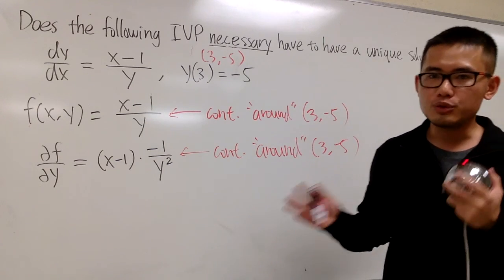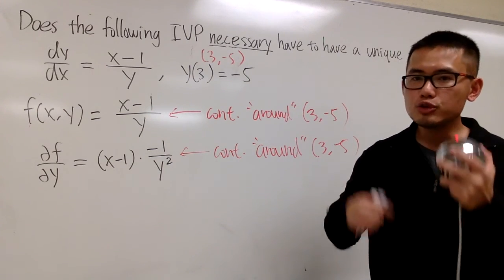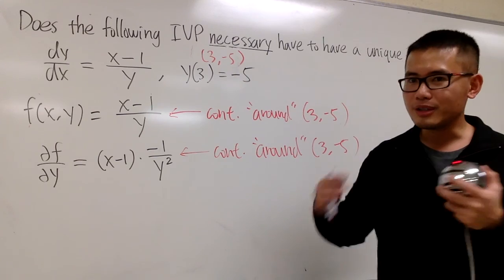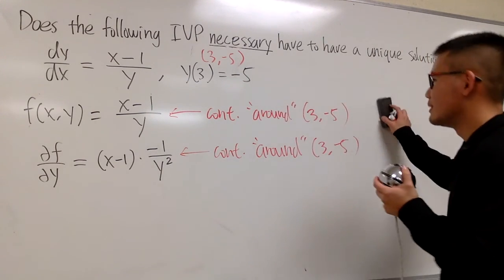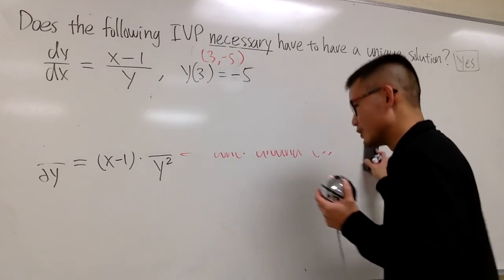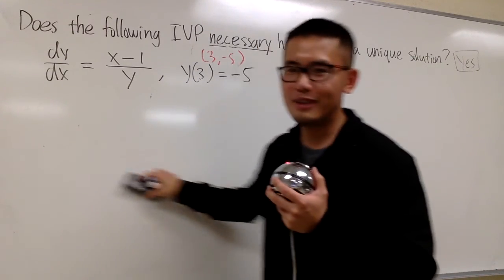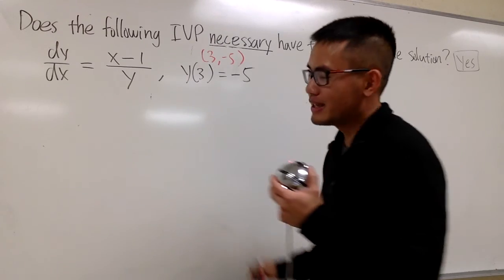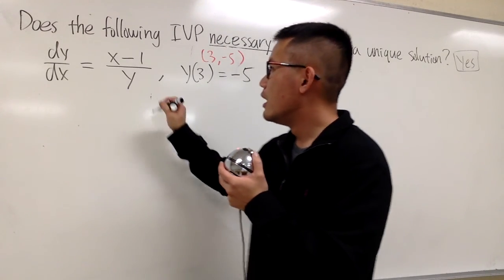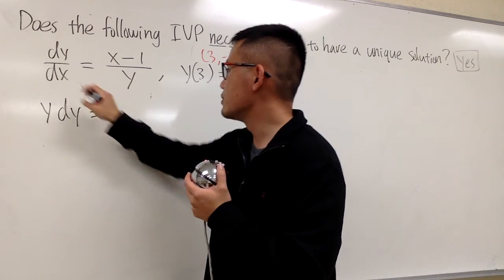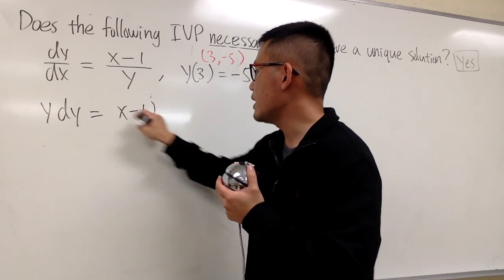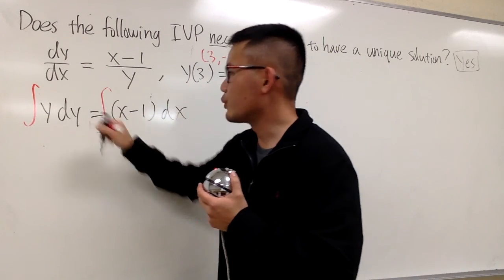And the reason I want to do this again with you guys is because during the algebra process earlier, we take the plus minus, and it seems that we'll always end up with plus minus, but you will see we still will just end up with one and only one. Anyways, let's get to work for this. Multiply y on both sides. We have y dy equals to x-1 dx. And then, integrate.